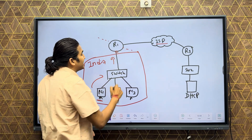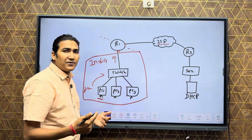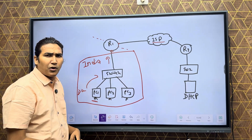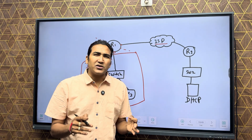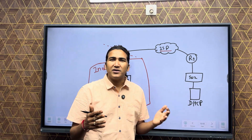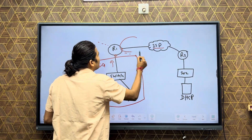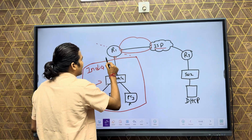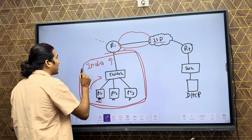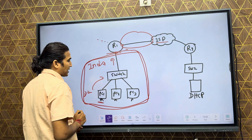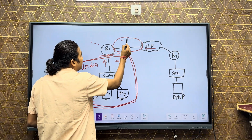Each interface is in a different broadcast domain. A broadcast domain is a domain where broadcast messages can travel. So this is one broadcast domain and that is another broadcast domain — both are different broadcast domains. A broadcast message from one domain cannot travel into another domain.